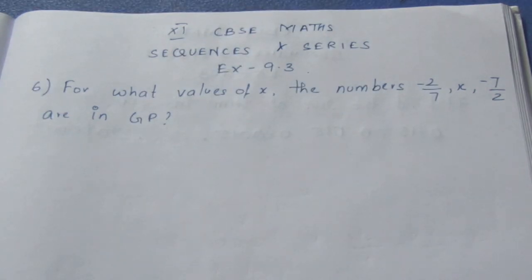Let's see the question: For what value of x, the numbers -2/7, x, -7/2 are in GP? So we need to find x given that the three numbers are in GP.